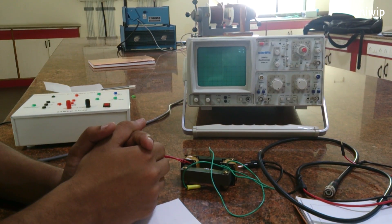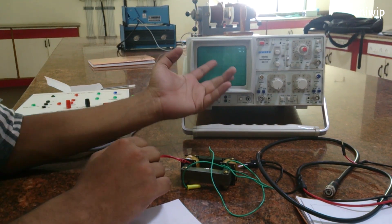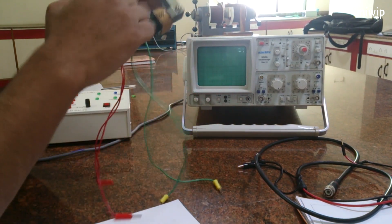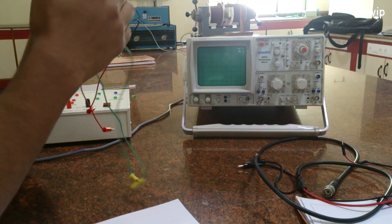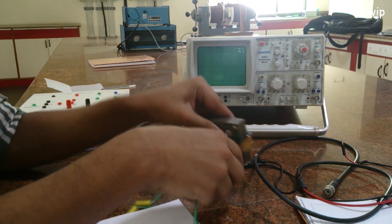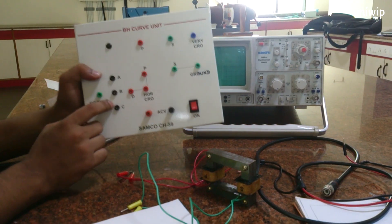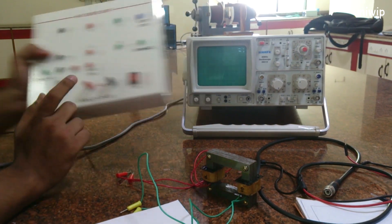In this experiment we'll be plotting a BH curve with this CRO of this transformer right here. This transformer has a primary coil and a secondary coil, and we'll be needing some apparatus that I'll be showing you - this BH curve unit which will be provided to you during your examinations.